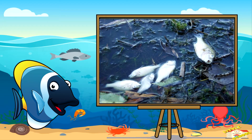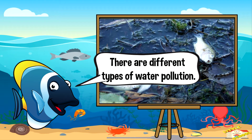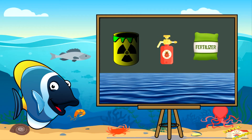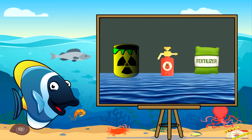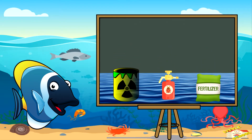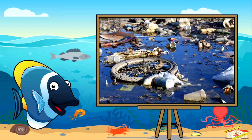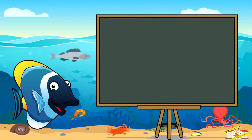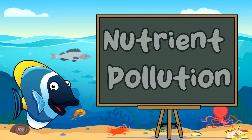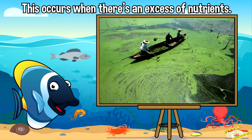There are different types of water pollution. Chemical pollution: this happens when harmful chemicals like industrial waste, pesticides, or fertilizers find their way into the water. These chemicals can be toxic to aquatic life and can even make the water unsafe for humans to use.